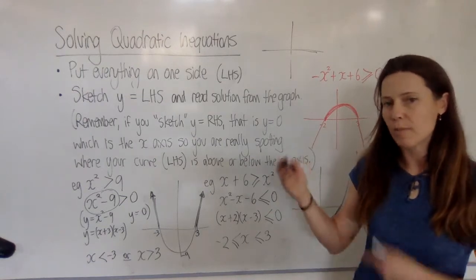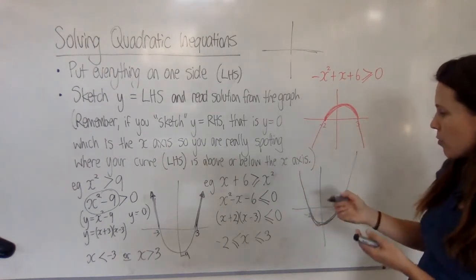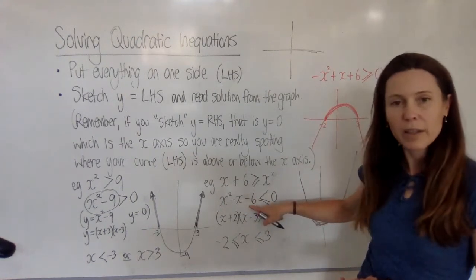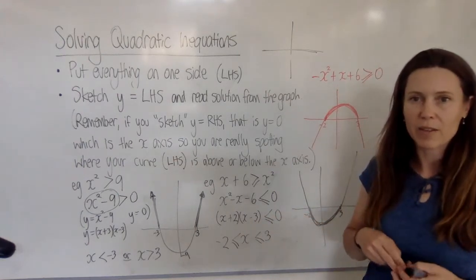So you can see it doesn't matter too much which way around you do it, but if you've got some consistency and work with things that are easy—factorizing that is harder than factorizing this one—so work with something that's easy to factorize and you'll get your answer nice and quickly.